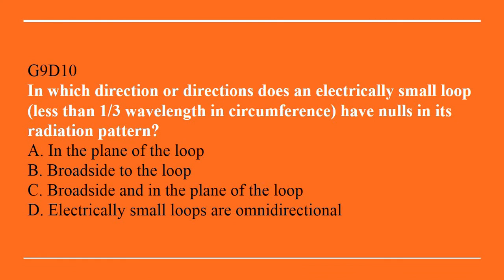G9D10: In which direction or directions does an electrically small loop (less than one-third wavelength in circumference) have nulls in its radiation pattern? A. In the plane of the loop. B. Broadside to the loop. C. Broadside in the plane of the loop. Or D. Electrically small loops are omnidirectional. The answer is B, broadside to the loop.